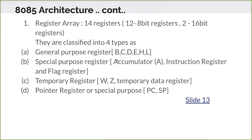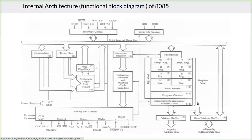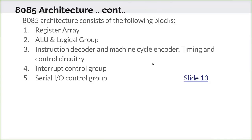The registers are classified into four types. General purpose registers are B, C, D, E, H, and L — these are available to the user. However, W and Z are also temporary registers, but they are not available in the instruction set for the user. They are internally used by the CPU to store temporary values.